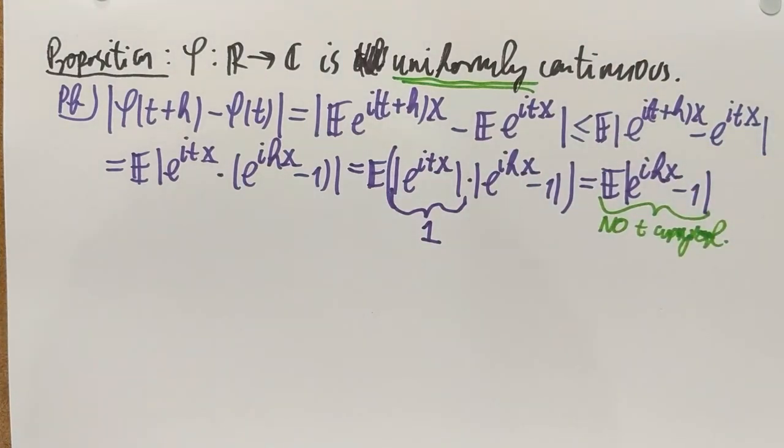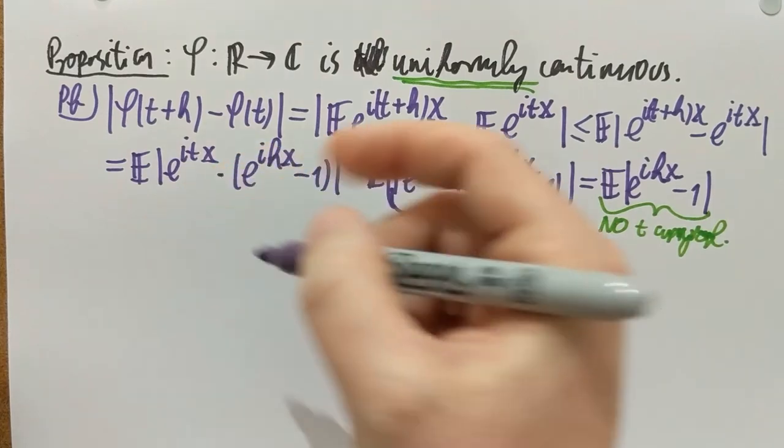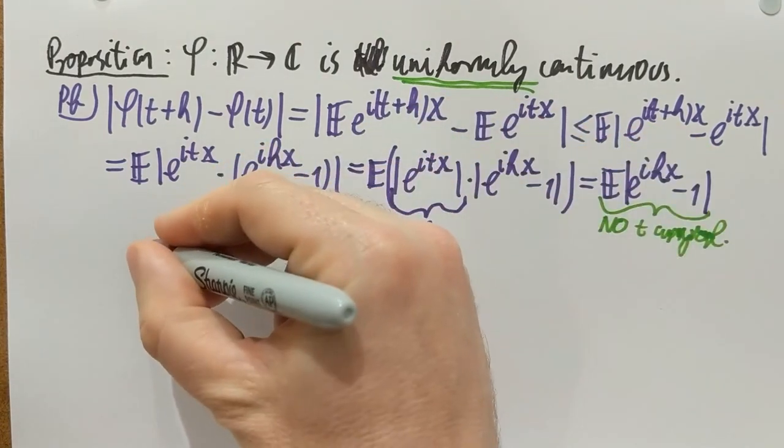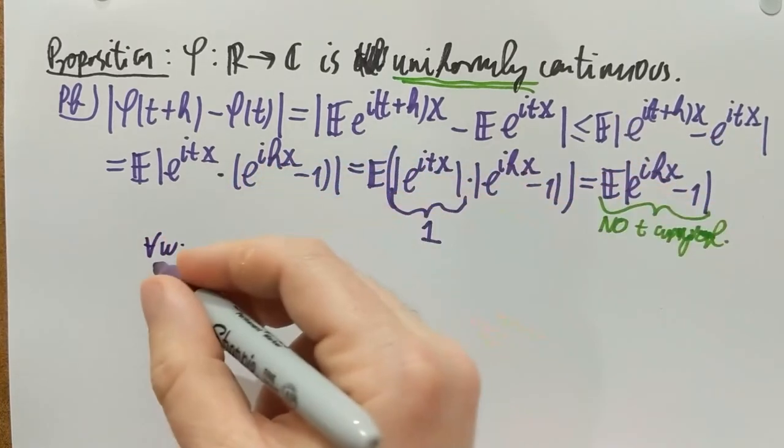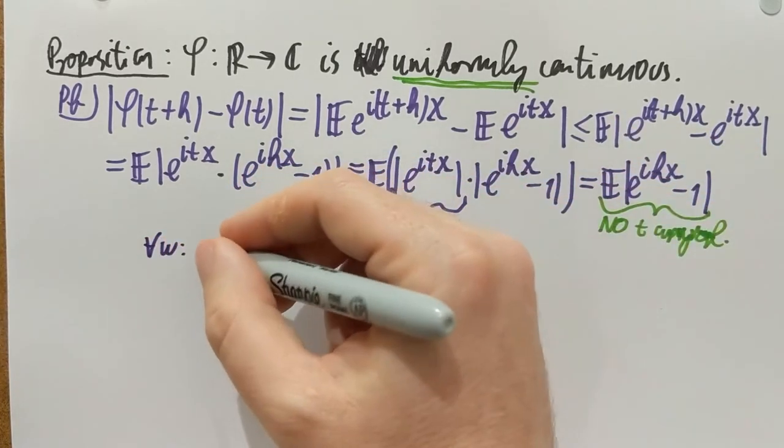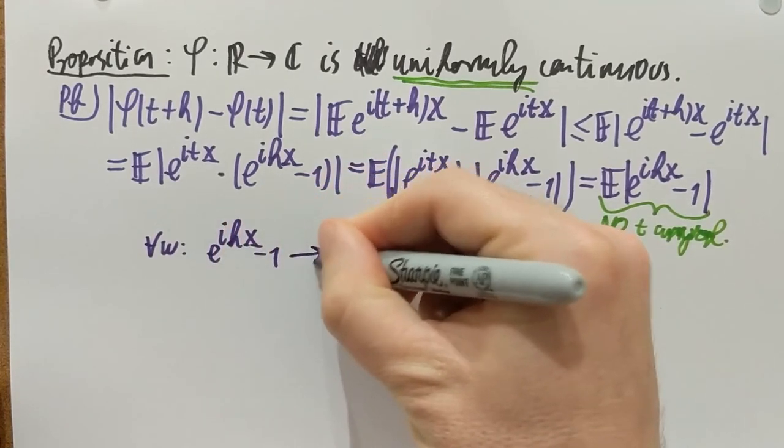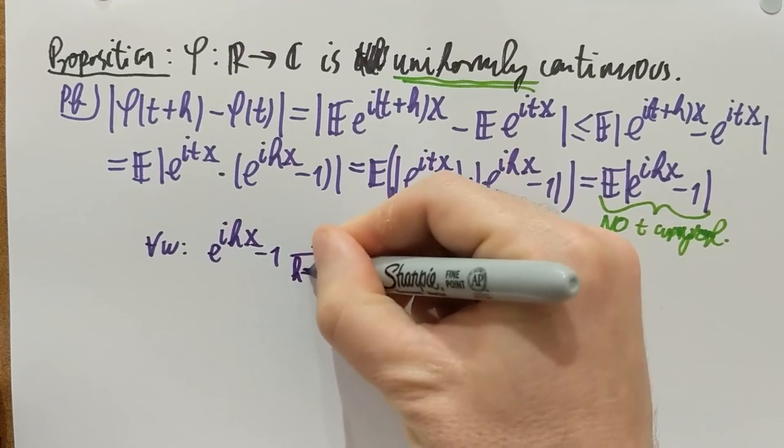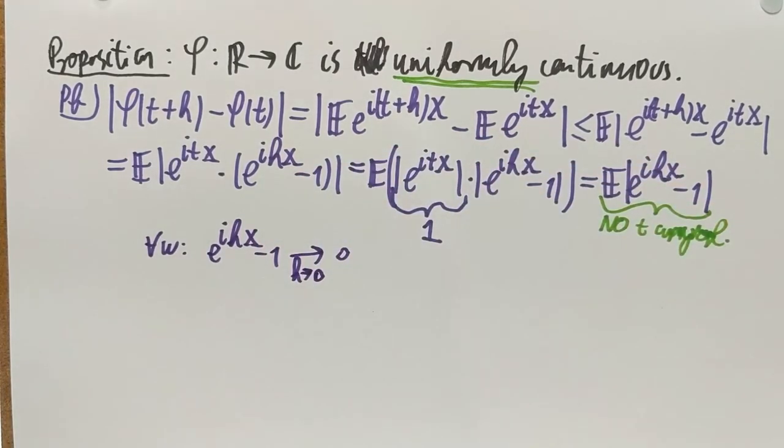Now, how can I put a bound here? Well, it's gonna be not very difficult because as h goes to 0, the exponential function goes to 1. So, no matter what happens with x, so for any randomness, any omega, e to the i·h·x minus 1 will go to 0 as I take h to 0. No matter what the value of x is, the exponential of i·h·x will go to 1. If I subtract 1, it goes to 0.